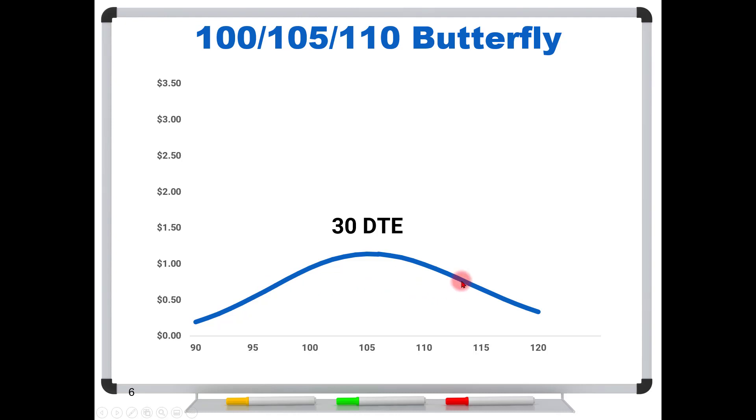But watch what happens with this same strategy with only five days to expiration. You're going to move from the blue line to the red. So now it doesn't look like a rolling hill down here. It looks like you're going off a cliff. That stock price makes a little tiny move out here to the right and your P&L goes straight off a cliff.